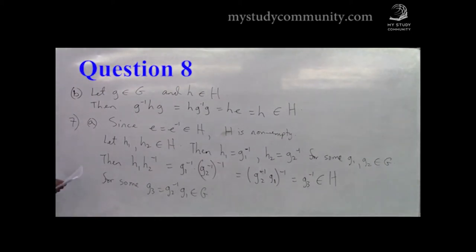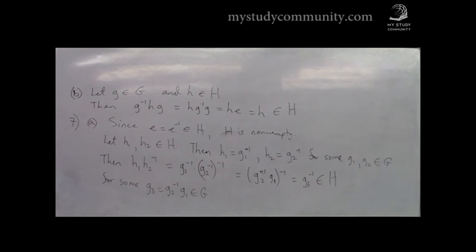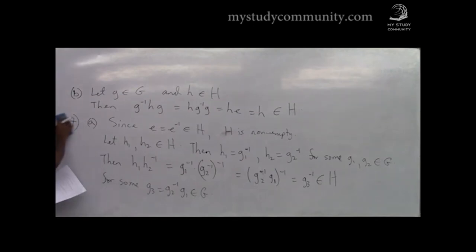Question 8 part A: state Lagrange's theorem. The order of a subgroup H of G must divide the order of G. You're missing one important word — G has to be a finite group. So you lost half the marks there. You need a finite group: if G is a finite group and H is a subgroup, then the order of H divides the order of G.